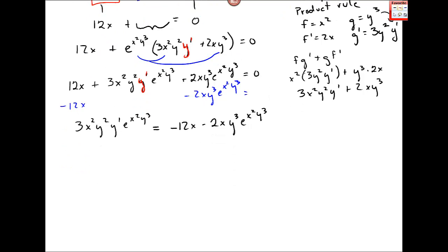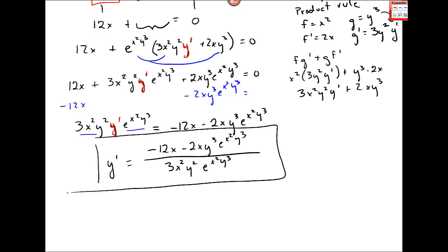So I get 3x squared y squared y prime e to the x squared y cubed is equal to now negative 12x minus 2xy cubed e to the x squared y cubed. And then now I just divide both sides by that and we'll be done. So I have y prime is equal to this right side over 3x squared y squared and e to the x squared y cubed. That's it. I mean it's a mess, but that's it.